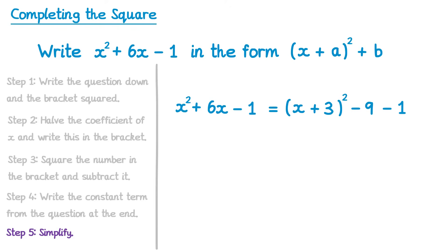Finally, the final step is to simplify. So we'll write the x plus 3 all squared, and then we've got negative 9, take away 1, which is take away 10, and we finish the question.